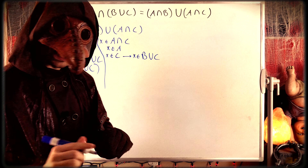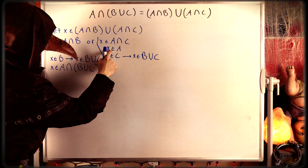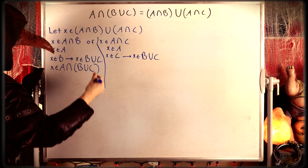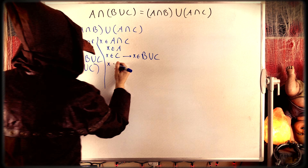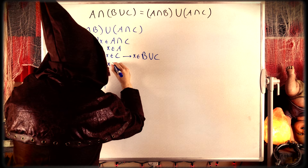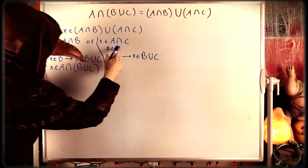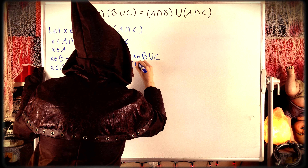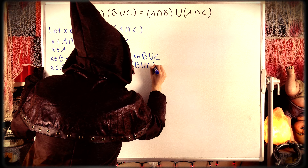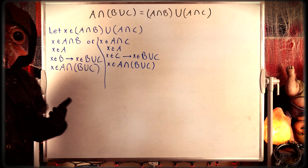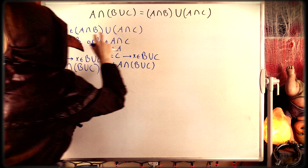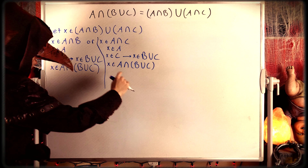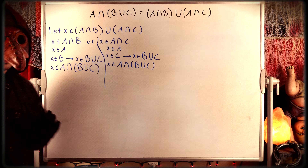Once again we have our desired result. Since x has to be in A and x is in B union C, by definition of set intersection x is an element of A intersect B union C. So any element of A intersect B union A intersect C must also belong to A intersect B union C.